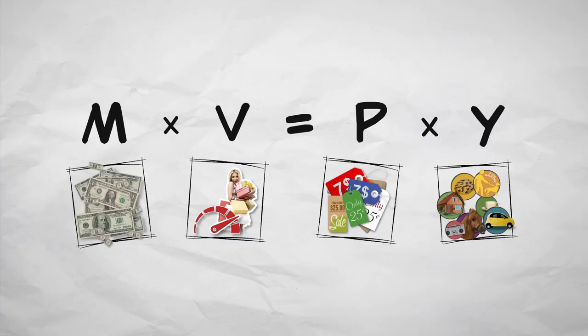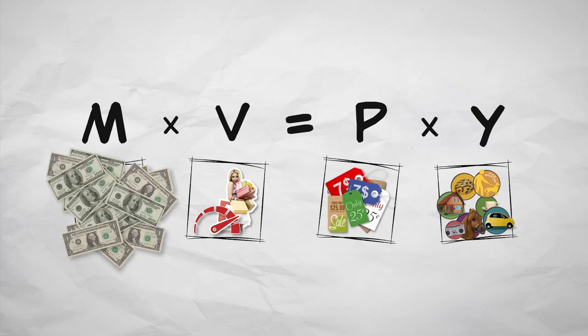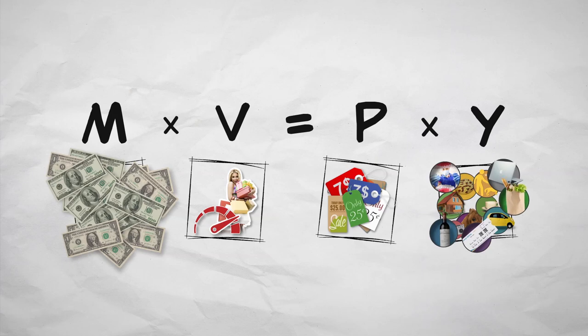But what about the short run? In the short run, an increase in M — especially an unexpected increase in M — can increase real output. To understand why, let's turn to the parable of inflation.